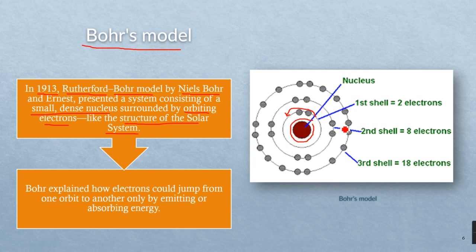Electrons were believed to have different energy levels or energy shells where they can jump from one shell to another or from one orbit to another by emitting or absorbing energy. That is the model that we know today and we are relying on up to now.